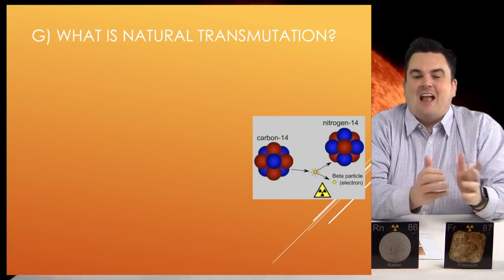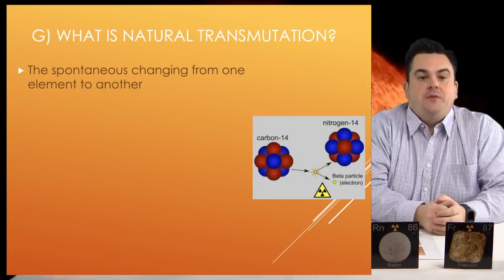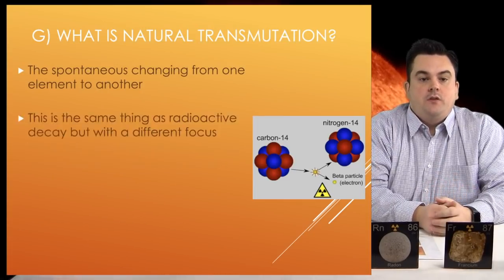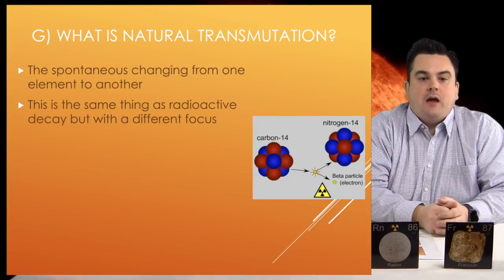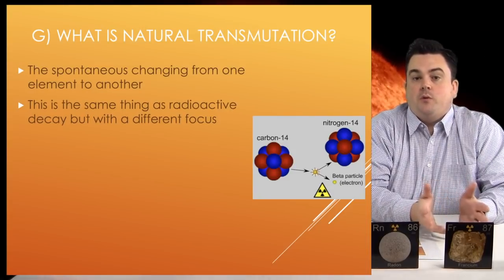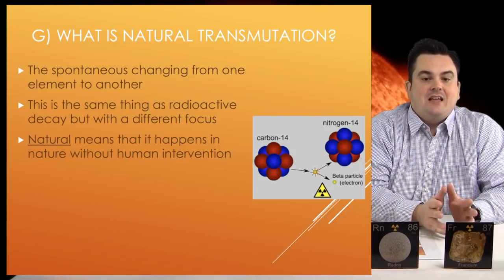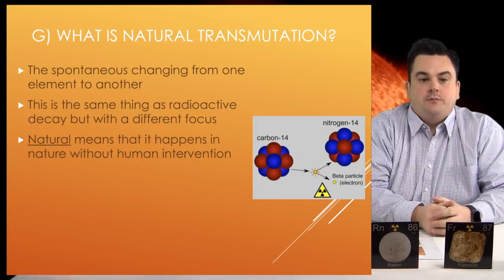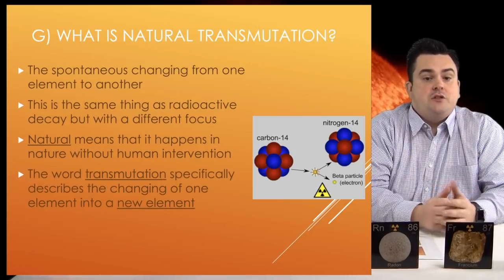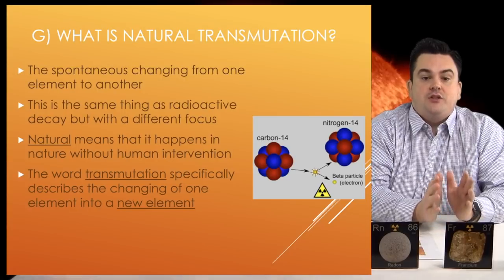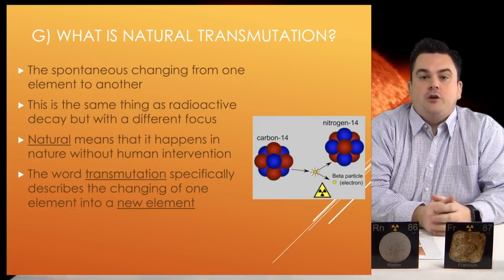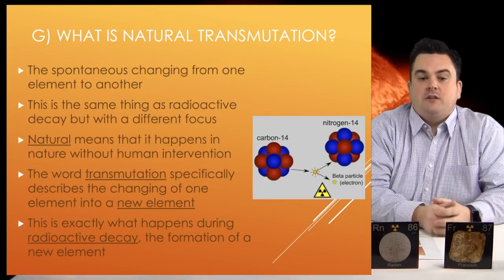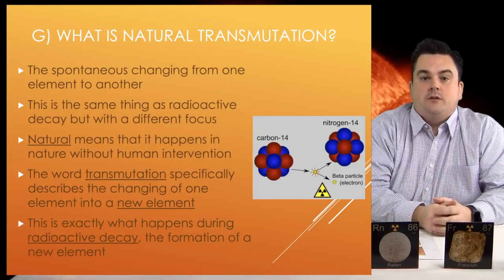What is natural transmutation? The spontaneous changing from one element to another. This is the same thing as radioactive decay, but with a different focus. Natural means it happens in nature without human intervention. The word transmutation specifically describes the changing of one element into a new element — exactly what happens during radioactive decay.